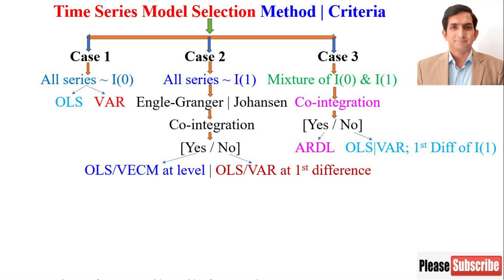Keep in mind there are two types of cointegration: one is Engle-Granger cointegration and the second is Johansen cointegration. Engle-Granger cointegration has a limitation — it is used only for one cointegrating equation. If you think there could be multiple cointegrating equations in your case, then go for Johansen cointegration.